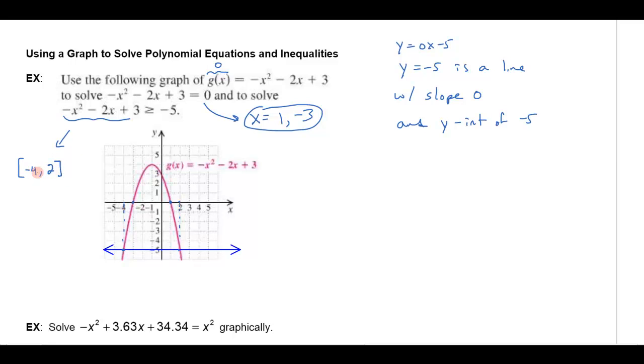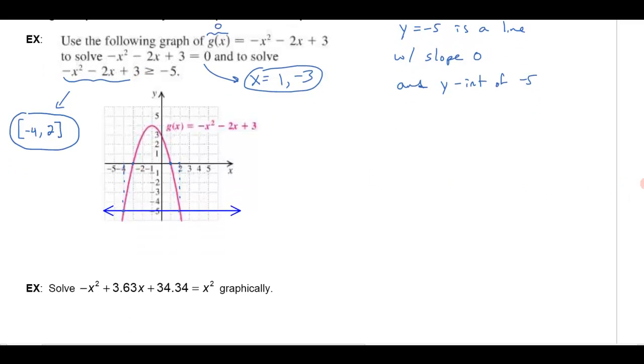So my answer to this part is going to be this interval between negative 4 and positive 2. And I'm going to include those two endpoints because at negative 4, it looks like that exactly equals negative 5, and over at 2, it exactly equals negative 5. So that's how we can use the graph to solve both this equation and this inequality. One last problem here.